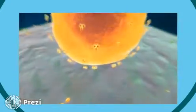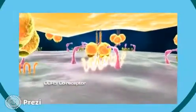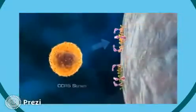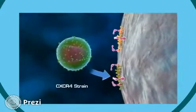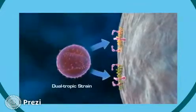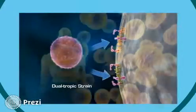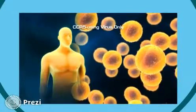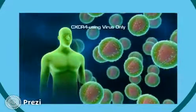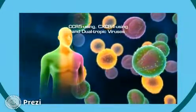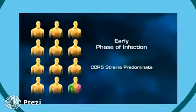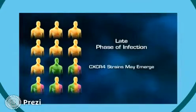Different HIV strains vary in their ability to use the major co-receptors to achieve entry into the host cell. Some HIV strains use only the CCR5 co-receptor, some only the CXCR4 co-receptor, while other viruses — known as dualtropic — use both. An HIV-infected individual may have only CCR5-using virus, only CXCR4-using virus, or a mixture of CCR5-using, CXCR4-using, and dualtropic viruses. In the early phase of infection, the CCR5-using virus predominates in most patients, while in the late phase, HIV strains capable of using CXCR4 often emerge.